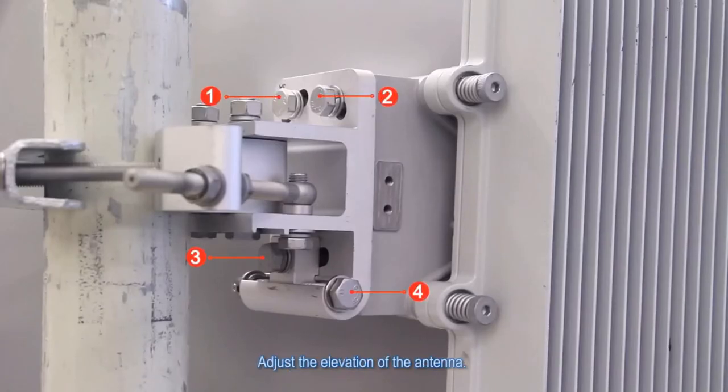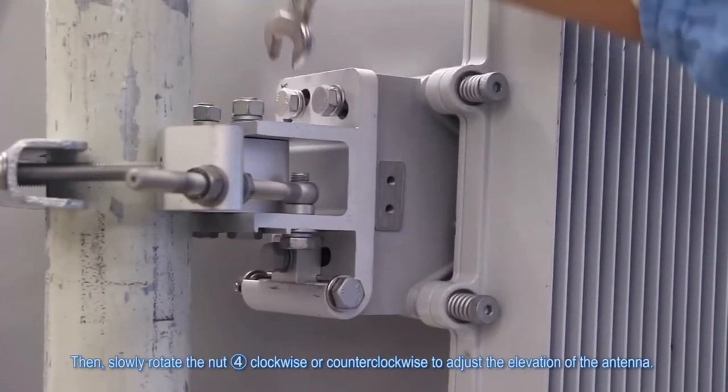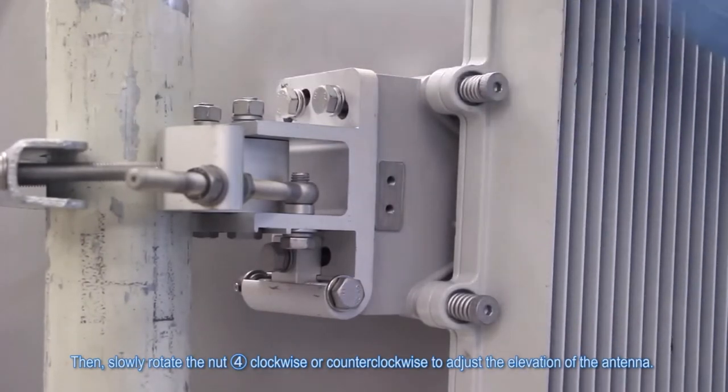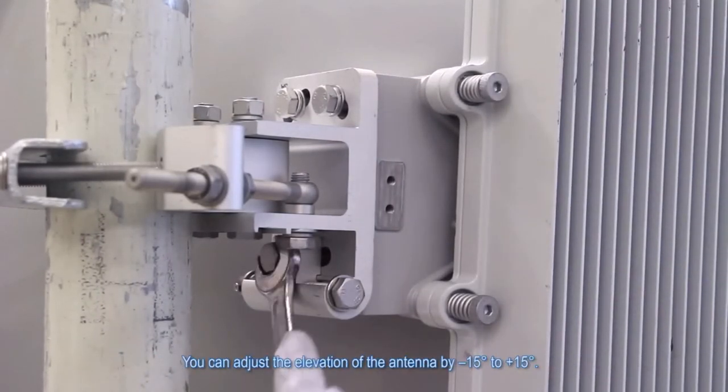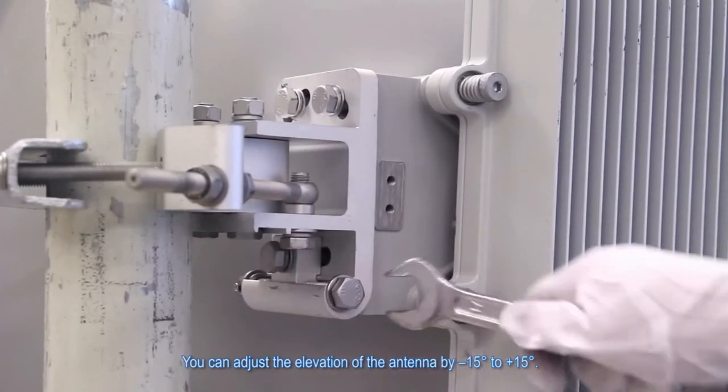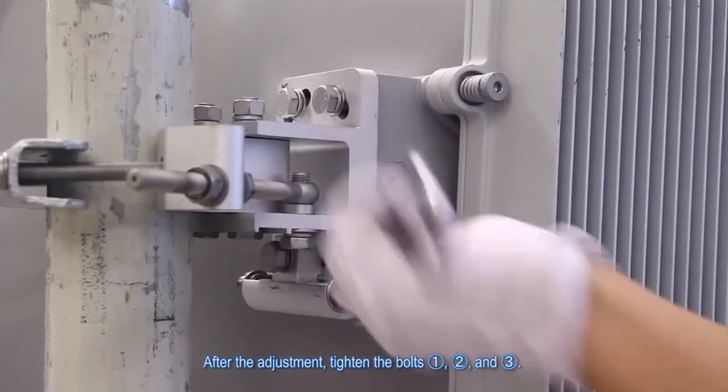Adjust the elevation of the antenna. Loosen bolts 1, 2, and 3. Then slowly rotate nut 4 clockwise or counterclockwise to adjust the elevation of the antenna. You can adjust the elevation of the antenna by negative 15 degrees to positive 15 degrees. After the adjustment, tighten bolts 1, 2, and 3.